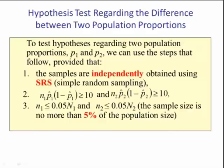Hypothesis tests regarding the difference between two population proportions. These are our three assumptions: The samples are independently obtained using a SRS, simple random sampling. The sample size of the first group times the p-hat of the first group times 1 minus the p-hat of the first group has to be greater than or equal to 10, and the same thing for the second group. Both sample sizes from the two groups have to be less than or equal to 5% of the original population. So those are our three assumptions.